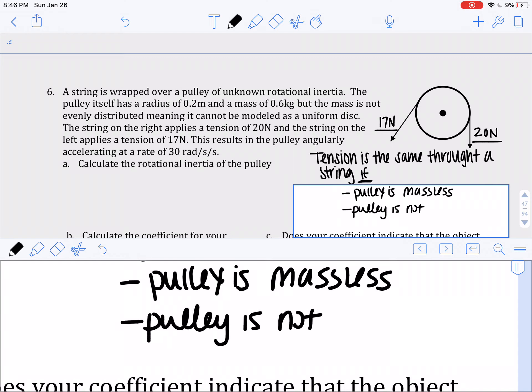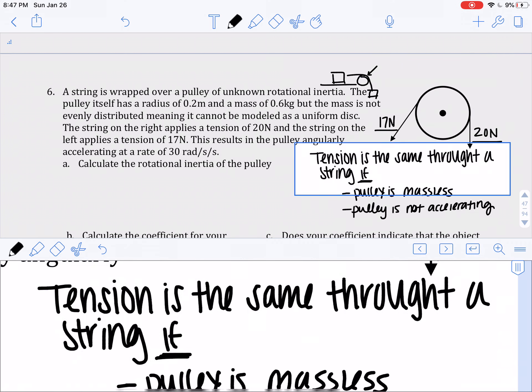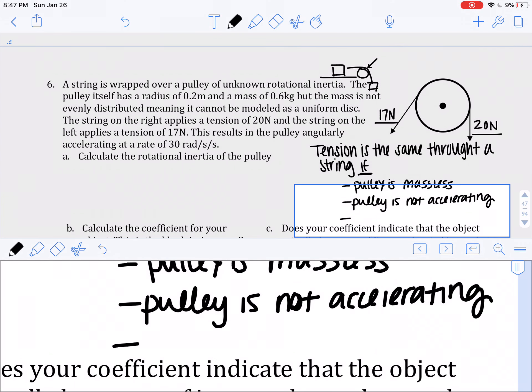So in our two body systems before, the ones where we had a box on a table and then there was a pulley and then another box, this pulley wasn't accelerating. It was staying stationary or maybe moving at a constant velocity. And then the other option is that the pulley has a radius of zero.